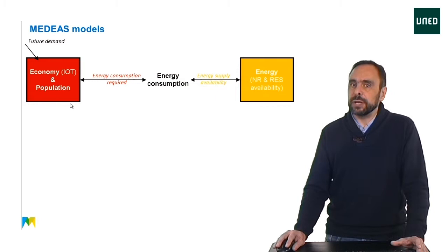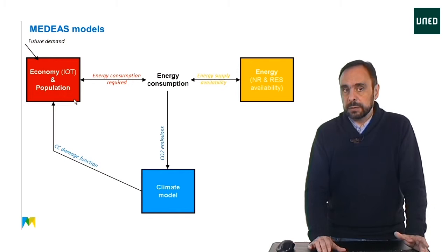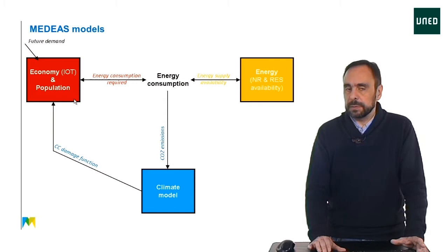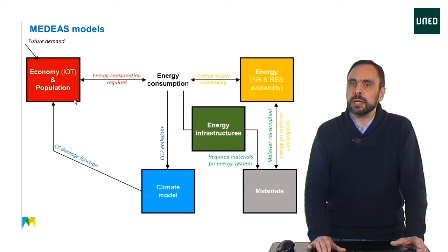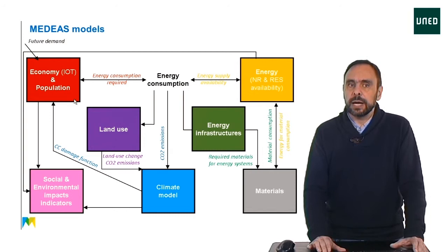The economic model demands energy from the energy model. The energy consumption produces greenhouse gas emissions that are the input of the climate model. In turn, climate change damages the economy, which is an important feedback loop. The construction of new energy facilities implies an important consumption of materials. The use of land also influences the climate. Finally, the availability of energy resources, the economy, and the climate determine some of the most important social and environmental impact indicators.